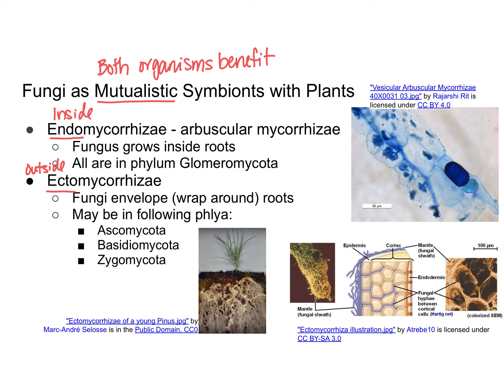You can see the arbuscular or endomycorrhizae in this picture here — the big blue glob is the fungus, and the surrounding structures are the cells that make up the root of the plant.